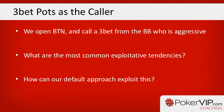Generally speaking, we should not be folding that much on the flop against an unknown. We should be bluff-raising certain textures and floating certain textures. The ideal result is we float the flop, our opponent c-bets, he checks the turn, we bet the turn — and in this situation, sizing is important. We don't want to bet too big.